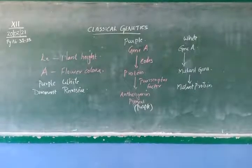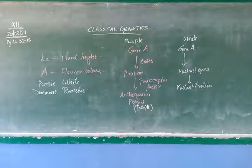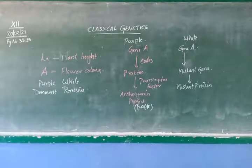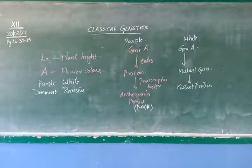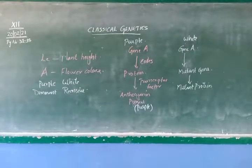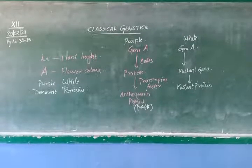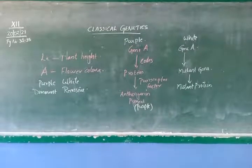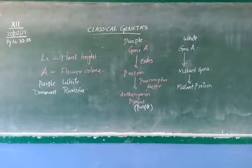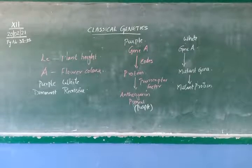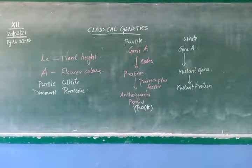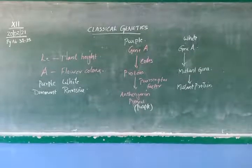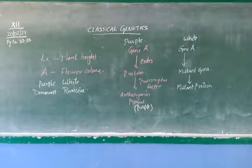To summarize today's class: we discussed what genetics is, the difference between heredity and variation, types of variation — discontinuous and continuous — with examples like style length in Primula, plant height, human height, and human skin color. We covered the importance of variation, the history of genetics including Gregor Johann Mendel as the father of genetics, the seven characters of Pisum sativum, and terminologies related to Mendelism. In the next class we will discuss monohybrid cross, dihybrid cross, and dihybrid test cross.